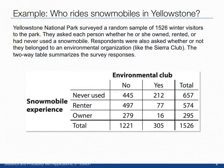Yellowstone National Park surveyed a random sample of 1,526 winter visitors. They asked each person whether they owned, rented, or had never used a snowmobile. Respondents were also asked whether or not they belonged to an environmental organization, such as the Sierra Club. The two-way table summarizes responses: 1,526 total respondents, categorized by environmental club membership (yes or no) and snowmobile experience (never used, renter, or owner).